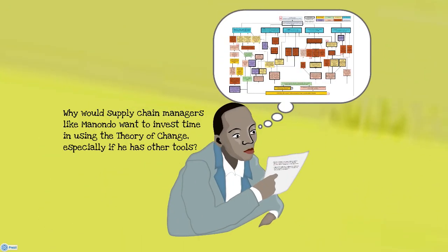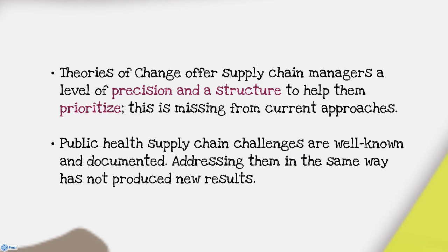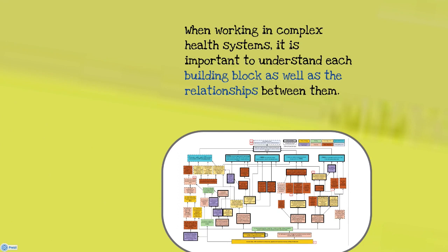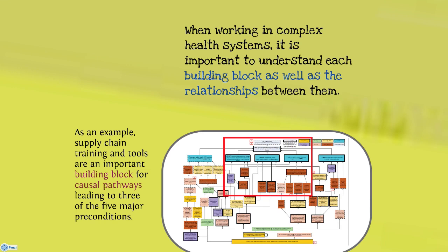Why would supply chain managers like Manondo want to invest time in using the theory of change, especially if he has other tools? A theory of change offers supply chain managers a level of precision and structure to help them prioritize — something missing from current approaches. Public health supply chain challenges are well known and documented, but addressing them in the same way has not produced new results. When working in complex health systems, it is important to understand each building block as well as the relationships between them.